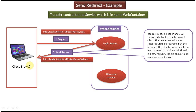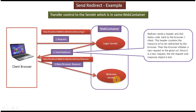So the client receives the response. Since we are using the SendRedirect method, the response header will contain two things: one is the status code which is 302, and another is the location of the new resource. The location of the new resource is http://localhost:8080/SendRedirectDemo/Welcome. The client will see the 302 status code and understand it has to redirect the request to the new resource. It gets the new resource location from the location header, then initiates a new request to the welcome servlet. The welcome servlet processes the request and sends the response back to the client. This is how the SendRedirect method works.